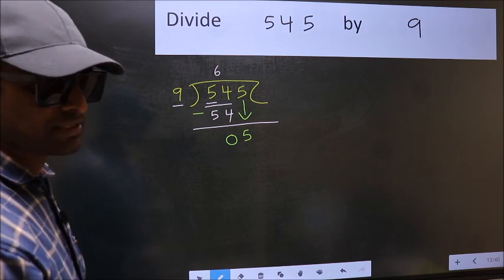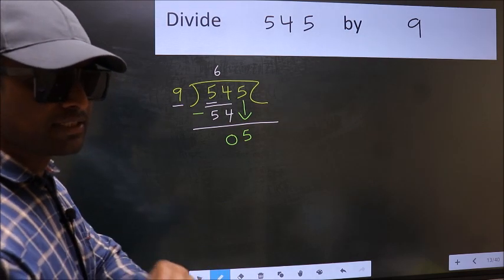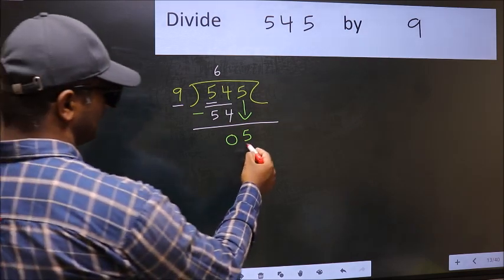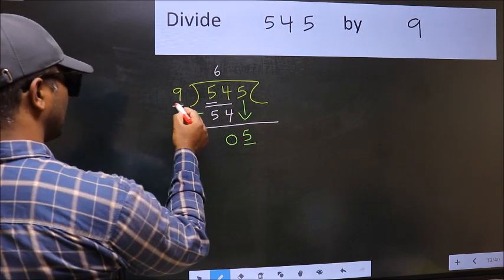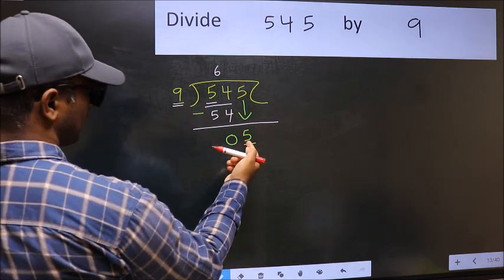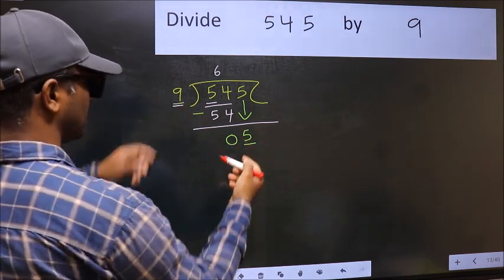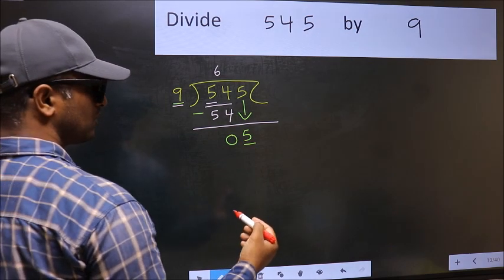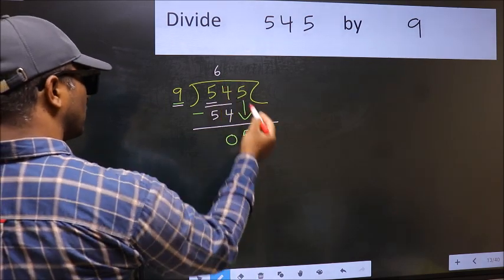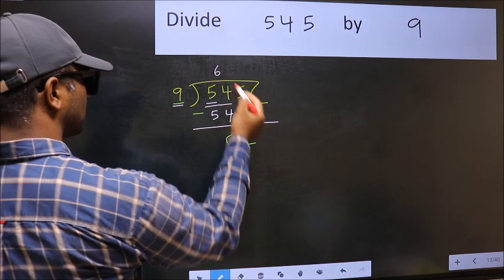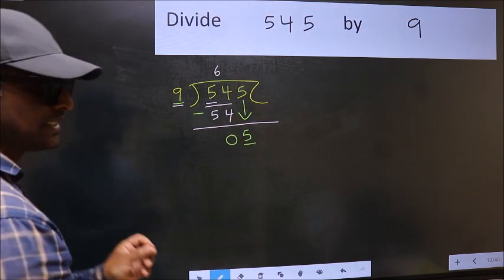After this step, the mistake happens. And the mistake is this. Here we have 5 and here 9. 5 is smaller than 9. So what many do is they directly put dot and take 0, which is wrong.